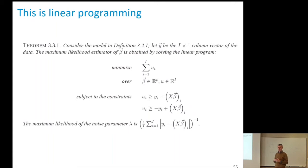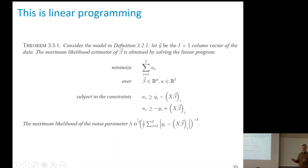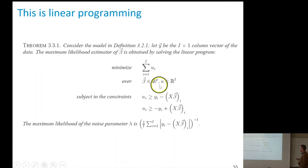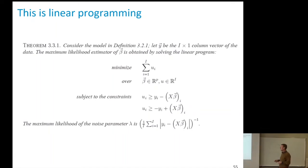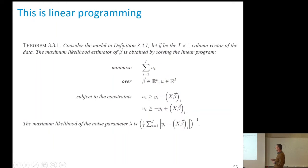Minimizing the sum of ui, given that ui has no constraint other than being lower bounded by the absolute value of the errors, means we take the smallest possible value for ui, which is exactly the absolute value. If we take anything larger, the score function will be larger — it won't be the solution. The reason we do this is because everything is now linear: the objective function is linear, and all constraints are linear. The variables are beta and u.